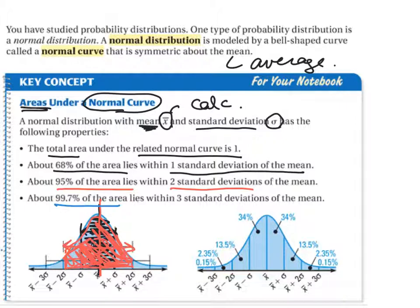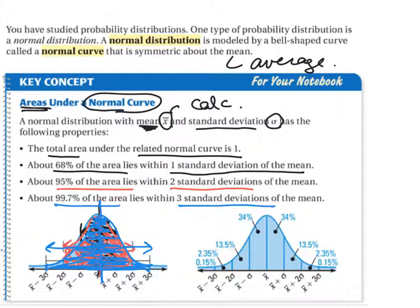And then 99.7% of the area lies within three standard deviations of the mean. Going three to the left and to the right, that is most of the data. It's broken up as 34% and 34% — adding those together you get 68% — another 13.5% and 13.5%, then a little bit more on each tail. That is your mean plus one, two, three standard deviations, and minus one, two, three.